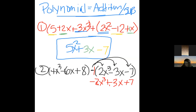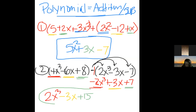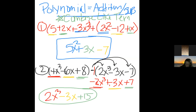Combine like terms: 4x³ and −2x³ give 2x³. −6x and +3x give −3x. 8 and +7 give 15. Final answer: 2x³ − 3x + 15. The key to addition and subtraction is combining like terms — just make sure on subtraction you distribute the minus sign first.